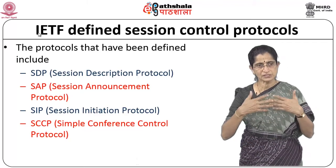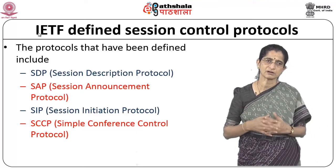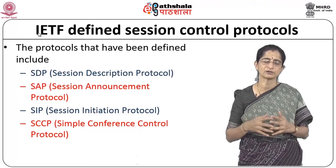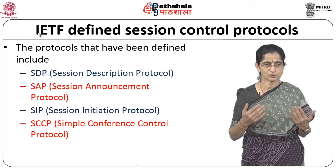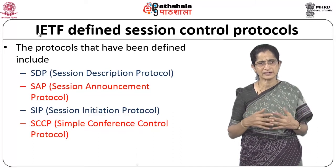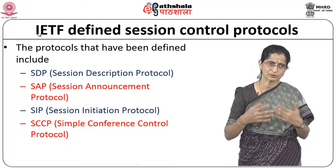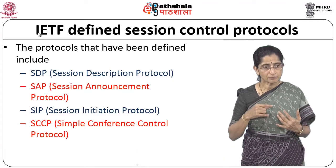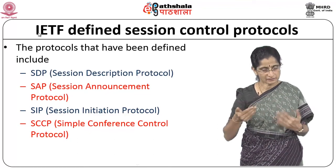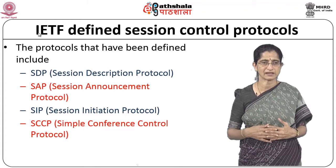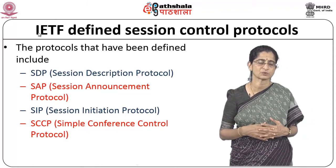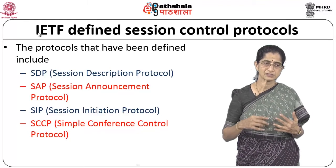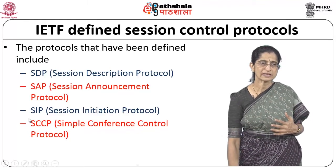SAP is a simple protocol that announces whatever information is there about a particular session to the same multicast address to which the conference will be multicast. The announcement is sent periodically so people can get it and log into the session. SIP is the main protocol used to establish the connection, get data transfer done, and finally tear down that connection. SCCP is used for conference control. We will focus on SDP and SIP.